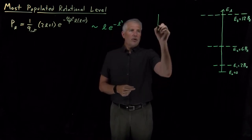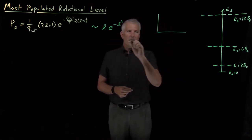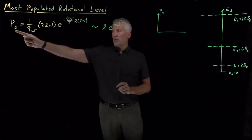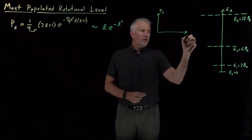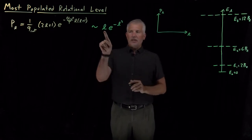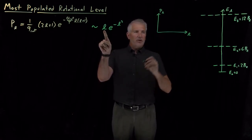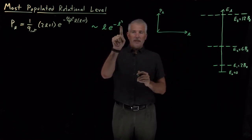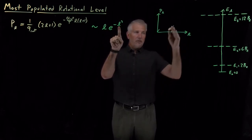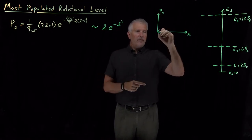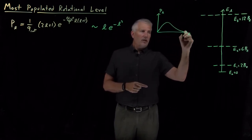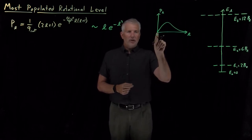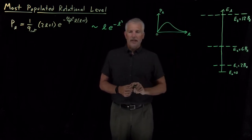If we were to graph what L times e to the minus L squared looks like as a function of L, at small values of L this number is small, so the function is small. At large values of L, e to the minus L squared has certainly become very small, so the function becomes very small at high values of L as well. What we have is a function that starts out small when L equals zero, goes through a maximum, and comes back down.